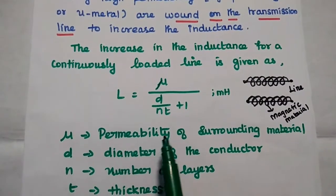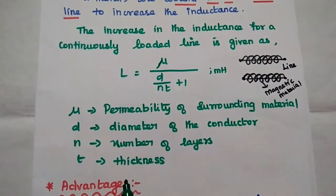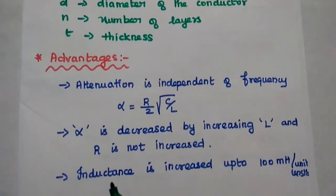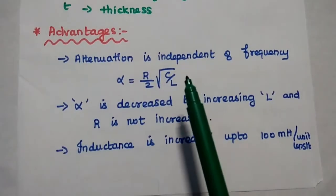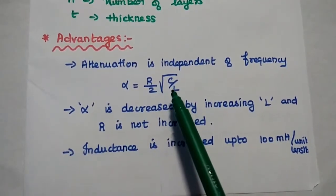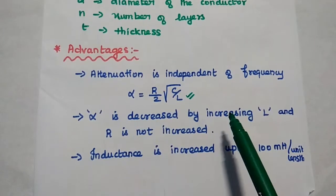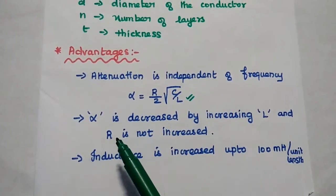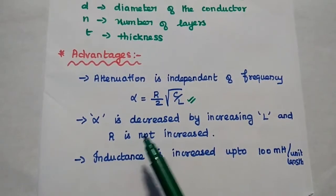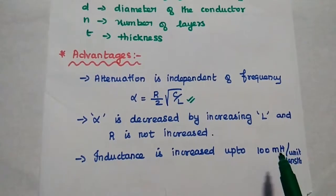Here, mu is the permeability of the surrounding material, d is the diameter of the conductor, n is the number of layers, and t is the thickness of the material. An advantage of continuous loading is that the attenuation is independent of frequency, with alpha equal to r by 2 times the square root of C by L. The attenuation alpha is decreased by increasing the inductance, provided the resistance is not increased. The inductance can be increased up to 100 millihenry per unit length.